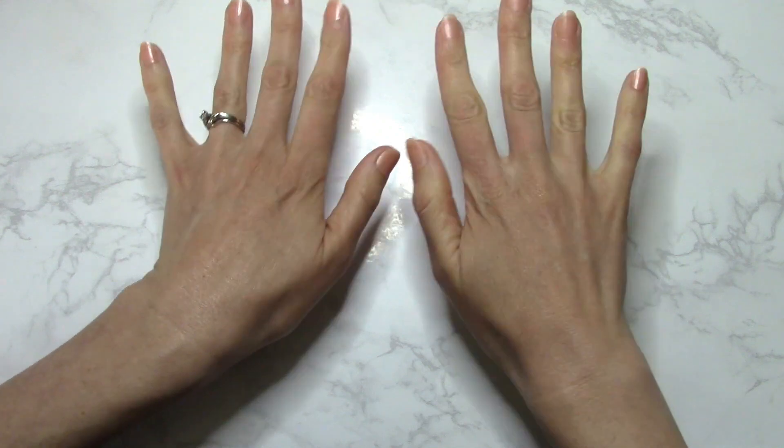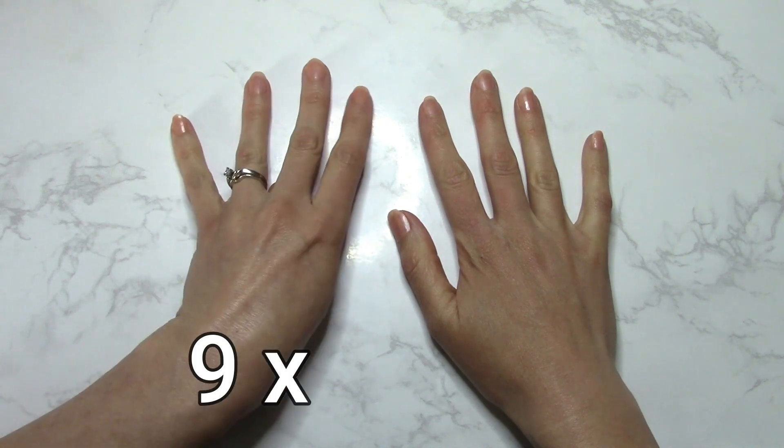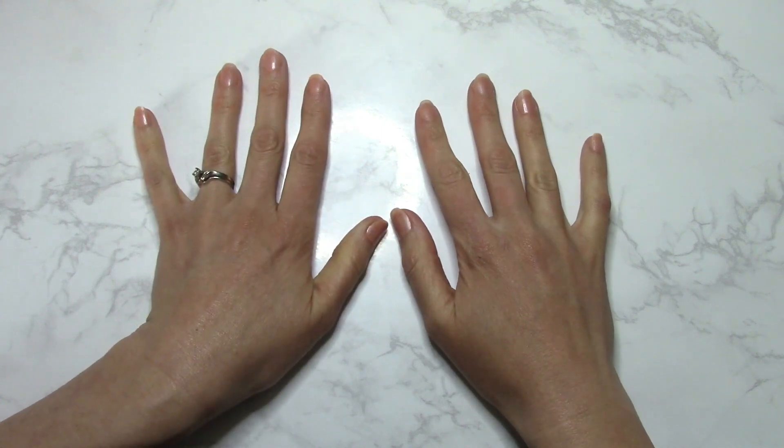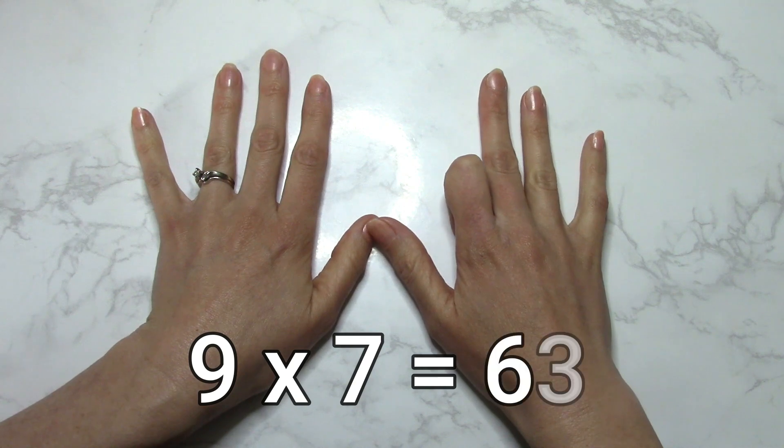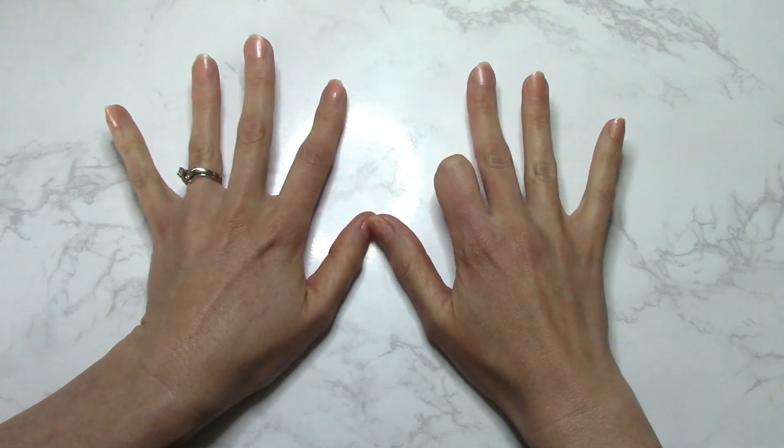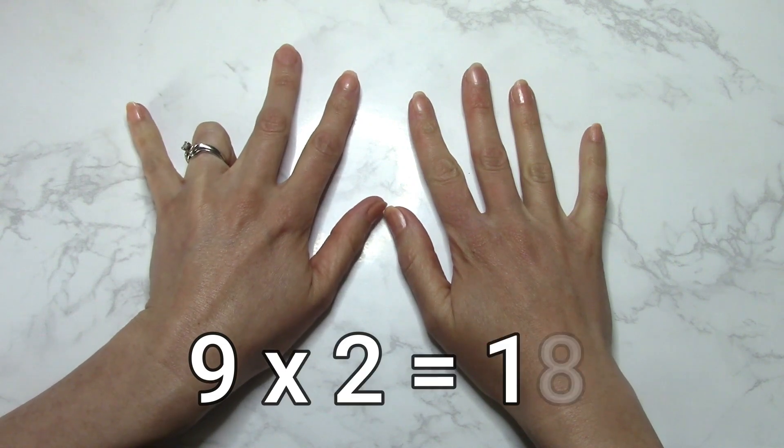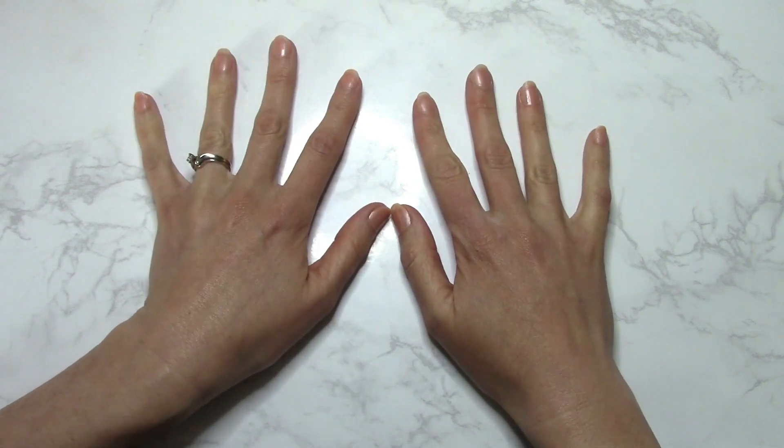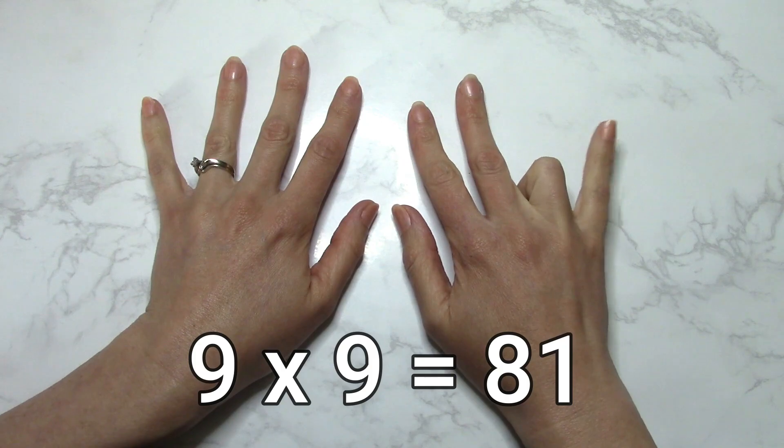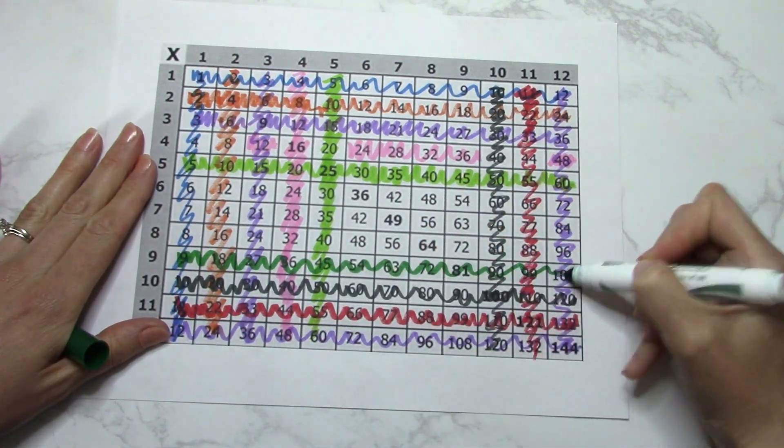To do the 9s, I want you to put your hands just like this. Now let's say I need to go 9 times 4. Tuck in your fourth finger and the answer is 45. Let's try another one: 9 times 7. Put in your seventh finger and we have 63. Now notice that all these numbers added up together do equal 9. But let's try another one: 9 times 2. We have 1 and 8, so the answer is 18. 9 times 9, tuck in the ninth finger, we have 81. Now whoever said we couldn't multiply using our fingers? There go the 9s.